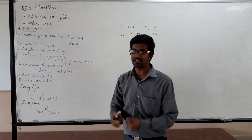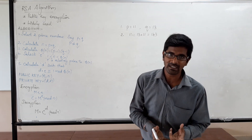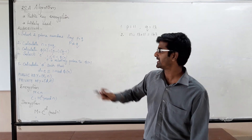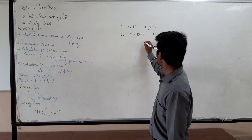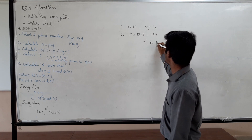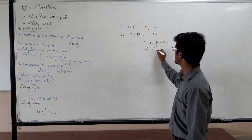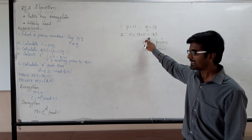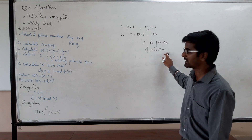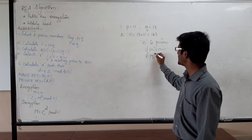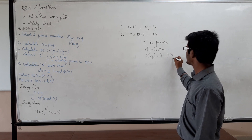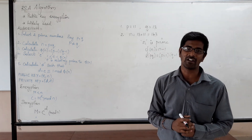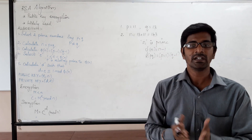Step 3 is calculating Euler's Totient function. If N is a prime number, the Euler's Totient function φ(N) equals N minus 1. In this case N is not a prime number because N is a product of two prime numbers P and Q. So φ(N) is written as (P−1) into (Q−1). That is the third step after calculating N.